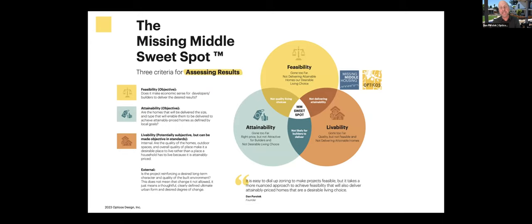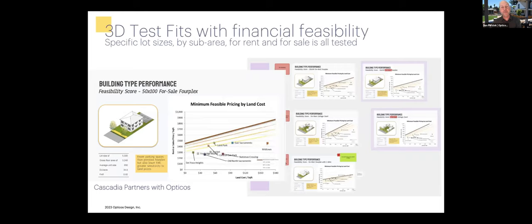Over the last six to seven years, every single one of our public sector projects typically involves a collaboration with an economist where we do what we call 3D test fits. We take a specific range of existing lot sizes from across a city, identifying typical lot widths and depths, then collaborate with the economist to run pro forma and feasibility analysis by sub-area and for both rent and for-sale scenarios. That's a necessary and critical part of informing the decisions we make from a policy standpoint, as well as what changes need to be made to zoning.